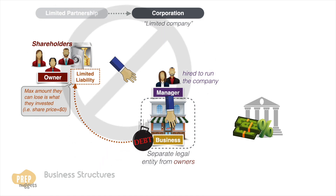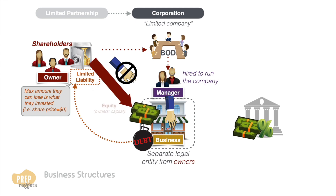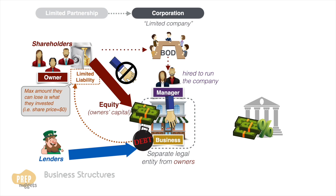Like for limited partnerships, the shareholders do not directly influence the company's operations and business decisions. Rather, the shareholders appoint a board of directors that is responsible for hiring the senior managers to operate the company. The board and the managers are responsible for acting in the interests of the shareholders. Besides capital from shareholders, which is known as ownership capital or equity, corporations may also obtain capital from lenders in the form of debt. Both shareholders and lenders are considered investors in the corporation, but only the shareholders are considered owners.